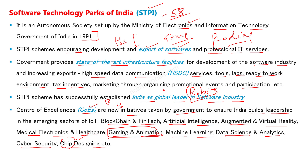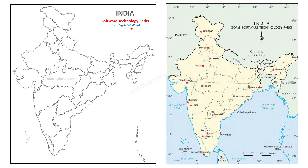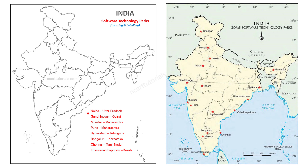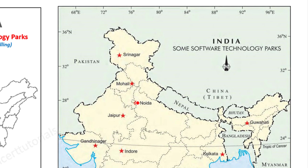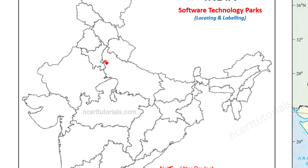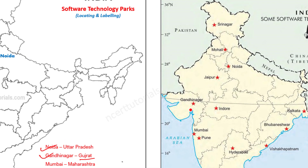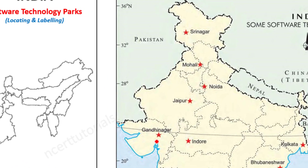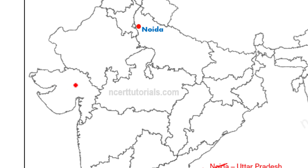अब map को fill up करते हैं। इसमें software technology parks के बारे में study करना है - locating और labeling से related है, means place ढूंढनी भी पड़ेगी और उस place का name भी लिखना पड़ेगा। Book का map साथ लेते हैं। Noida से शुरुआत करते हैं जो Uttar Pradesh में है - यह रहा Noida। Coastal area के सीध में match करते हुए आपको Gandhinagar मिलेगा।